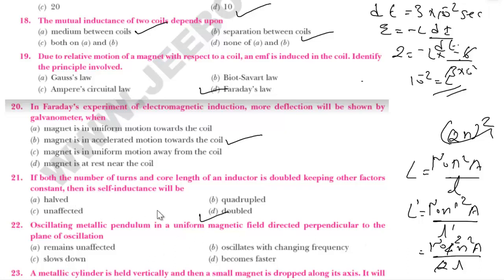You need to know that L = μ₀n²A/l is the formula for self-inductance of an inductor. Learn this formula by heart.